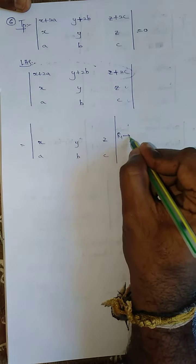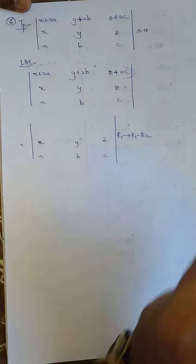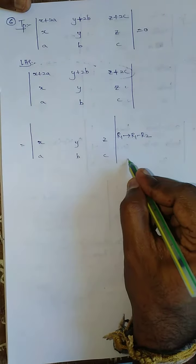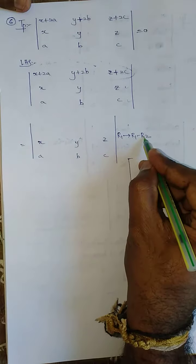R1 tends to R1 minus R2, that is all, because XX cancelled. If we are going to take R1 tends to R1 minus R2, means R1 minus R2.